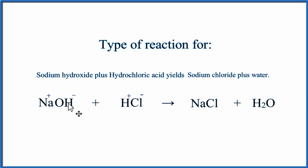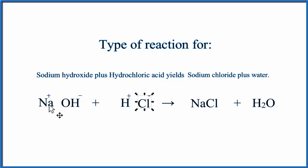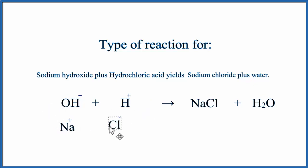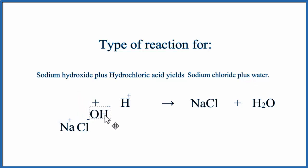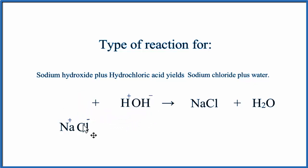That would look something like this. We put these two together, and each of them breaks apart. Now this sodium will join with the chlorine, and this negative hydroxide joins with the hydrogen — so the negatives and positives are together. We have NaCl as one product, and then HOH, which is just H₂O.